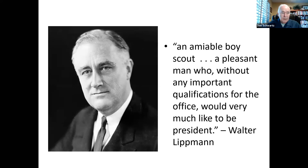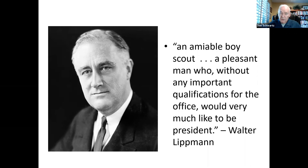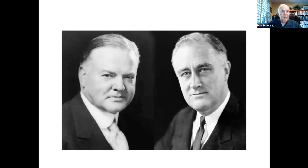Roosevelt wanted to show he was a man of action by flying to Chicago. In his acceptance speech, he promised a 'new deal for the American people,' and that name stuck. During the election there were tensions between Roosevelt and the Republican sitting president, Herbert Hoover. Both had been friends during World War I — FDR had even wanted to be Hoover's running mate in 1920 — but by 1932 they had become political enemies. Hoover wanted Roosevelt to endorse some of his policies, but FDR refused. Hoover even wanted Roosevelt to declare a bank holiday jointly, but FDR wanted conditions to deteriorate so he could later declare it and be regarded as the savior.